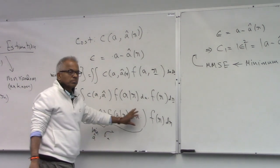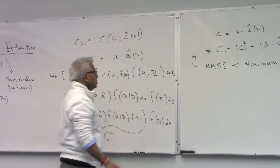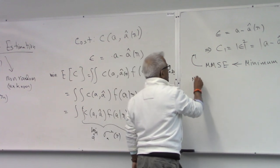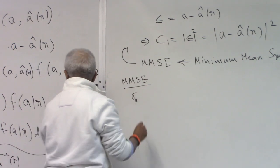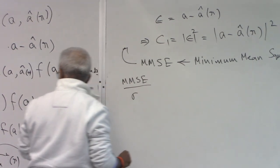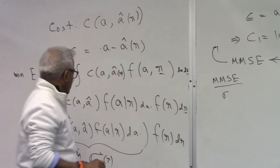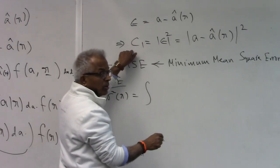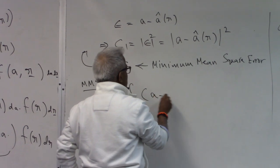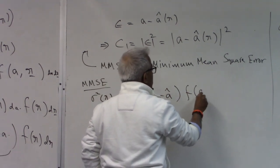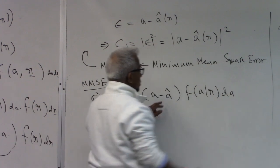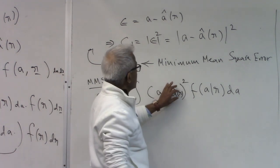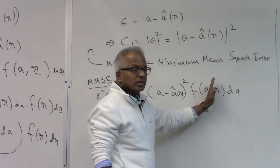Let's see what the MMSE estimator is. For the quadratic cost, the inner integral is (A − A-hat)² multiplied by f(A|R) dA. R is given, so A-hat is just an unknown constant at this stage. We minimize over A-hat: the task is to minimize over A-hat the whole conditional cost given R.